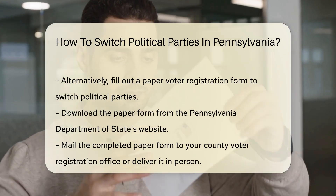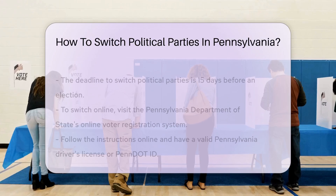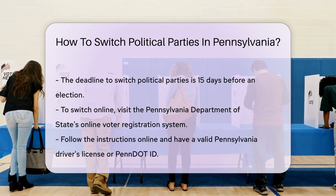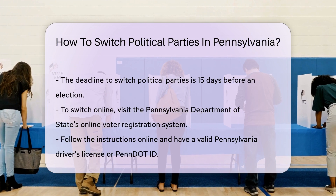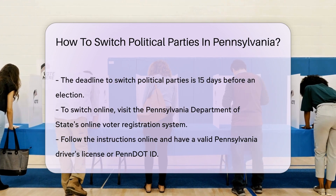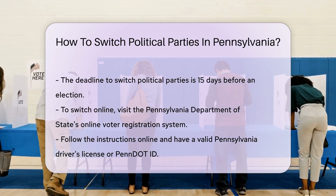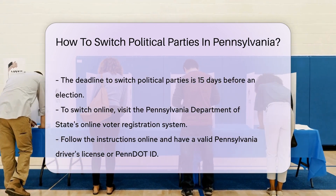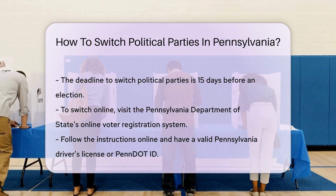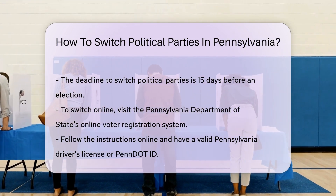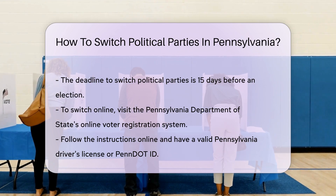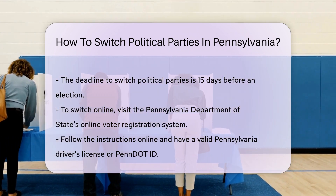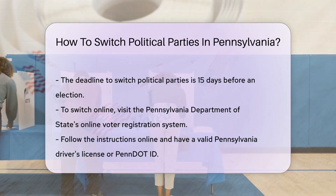If you choose to switch online, visit the Pennsylvania Department of State's online voter registration system. Follow the instructions to update your party affiliation. You will need a valid Pennsylvania driver's license or PennDOT ID to complete the online process.